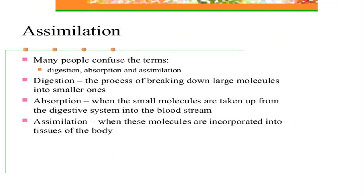Now, assimilation - many people confuse the terms digestion, absorption, and assimilation. Digestion is the breaking down of large molecules into smaller ones. Absorption is when small molecules are taken up from the digestive system and go into the bloodstream and each body cell. Assimilation is when these digested food molecules are incorporated into the tissues of the body to produce energy so that we can do various kinds of work. These three differences are very important.